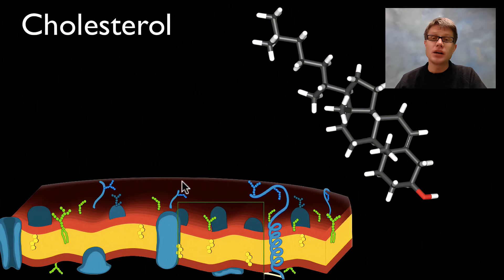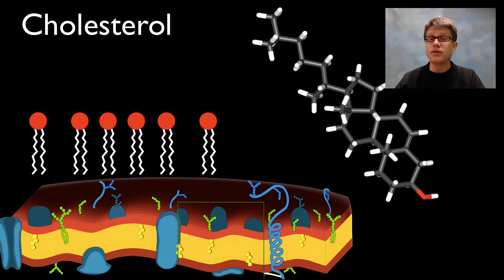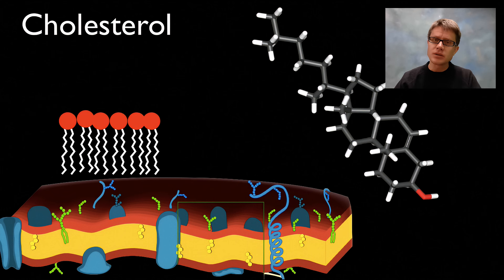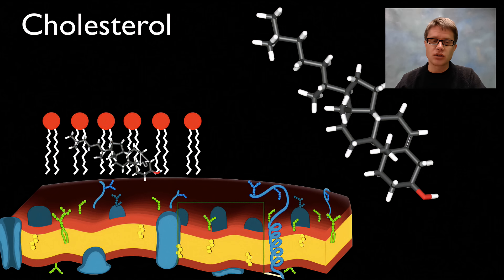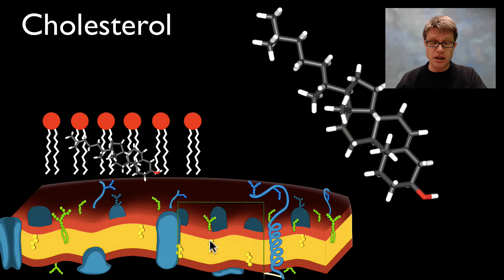Cholesterol is going to maintain the fluidity of the membrane. This cell membrane is made up of phospholipids that are constantly moving back and forth, which allows things like oxygen to get in and carbon dioxide to get out. But if the cell gets heated up, those phospholipids tend to fall apart, and if it gets really cold, they'll crowd together. The function of cholesterol is to grab onto those fatty acid tails — hold them together when it gets too warm, and keep them apart when it gets too cold. So cholesterol is important for maintaining the integrity of the cell membrane. We can build it in each of our cells, but we also need to get a little bit of it in our diet.